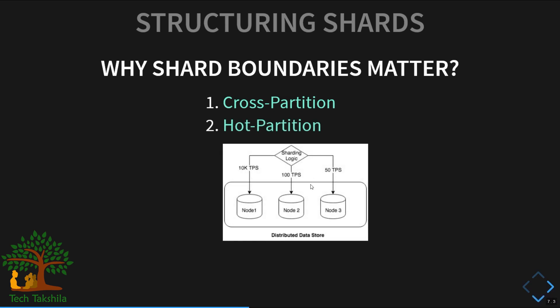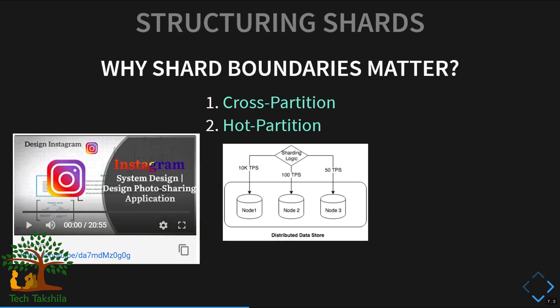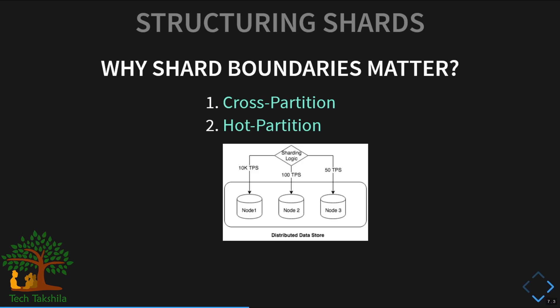The second problem is hot partitions, where all data needed for some operation ends up on the same partition, hammering that database node with reads and writes. A common example is Instagram, where a celebrity's uploaded photo gets seen by millions of users. Instagram uses sharding strategies to avoid hot partitions. We covered this in our Instagram system design video — find the link in the description.